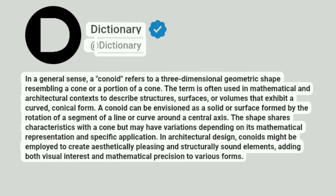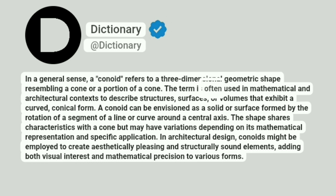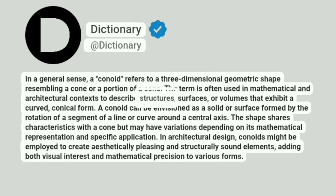A Dictionary. In a general sense, a conoid refers to a three-dimensional geometric shape resembling a cone or a portion of a cone. The term is often used in mathematical and architectural contexts to describe structures, surfaces, or volumes that exhibit a curved, conical form.